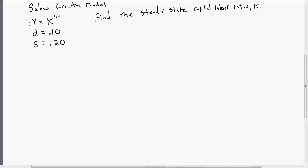We've got a production function in an economy where Y is GDP per worker equals the capital labor ratio raised to the one-fourth power. D is the depreciation rate, and S is the national saving rate. So given this basic setup, let's go ahead now and start finding some things in the steady state. Let's find the steady state capital labor ratio.